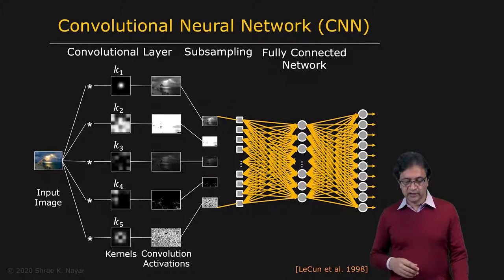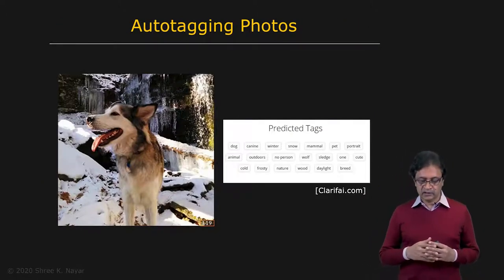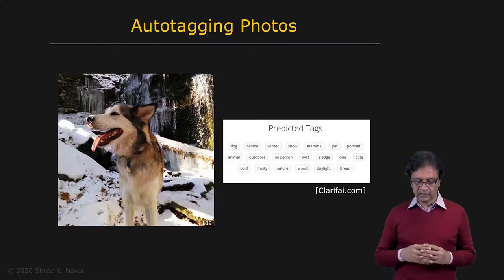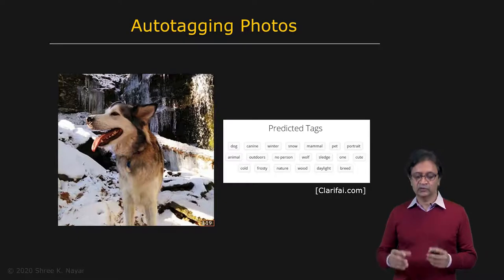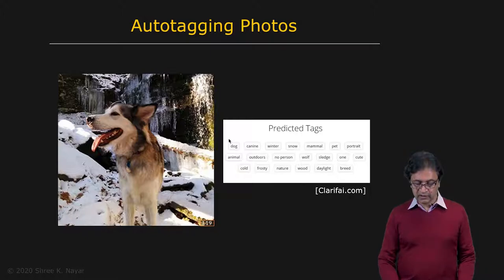So using these kind of networks, a lot of applications have been demonstrated. This is one by a company called Clarify where you can upload your own picture and it will tag the picture. It'll tell you, give you sort of a symbolic description of the picture. So here it says you have a dog, it's winter, there's snow,